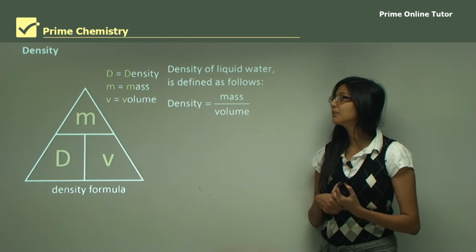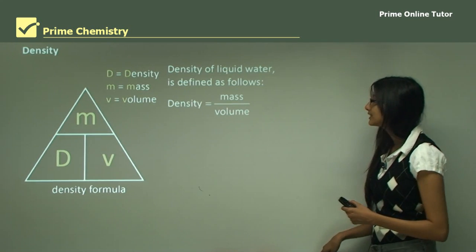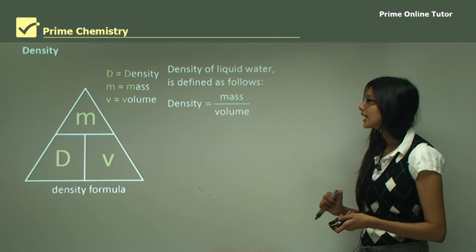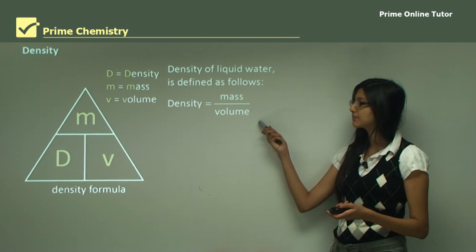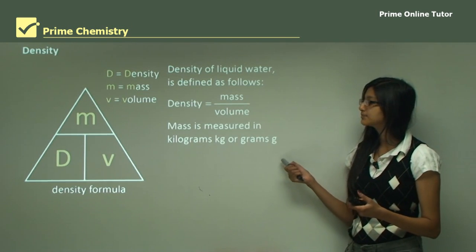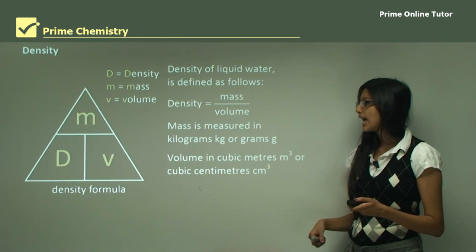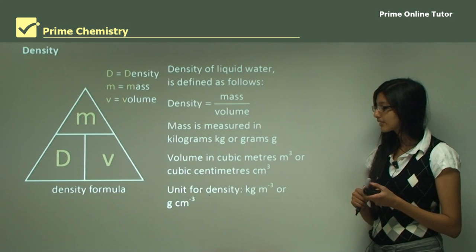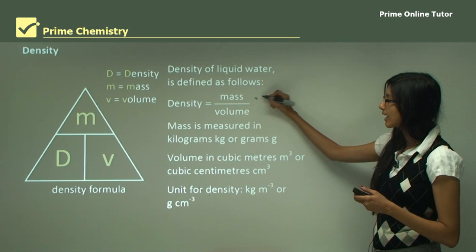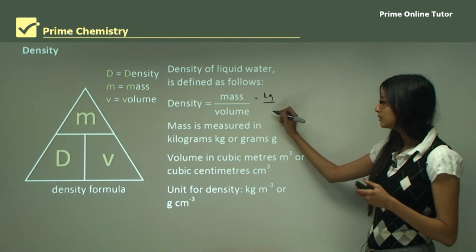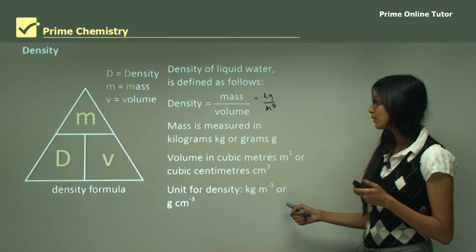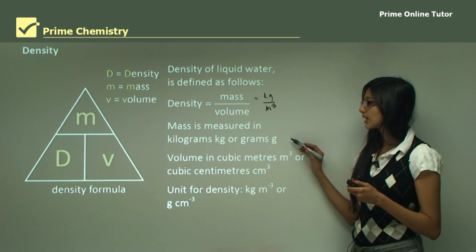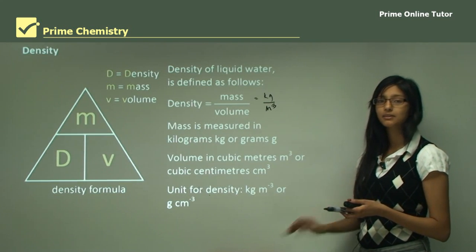So first, let's look at what density means. The density of a liquid or water is defined as mass divided by volume. Mass is measured in kilograms or grams, and volume is measured in cubic meters or cubic centimeters. Therefore, the unit for density will be kilograms per meter cubed, or in terms of grams and centimeter cubed, grams per centimeter cubed.